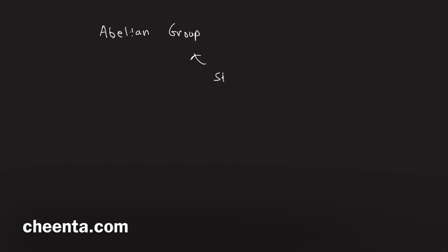Today we will learn about abelian groups and there is a very powerful structure theorem related to abelian groups. I'll start with an example so that we completely understand this. Suppose G is an abelian group and it has 15 elements — so we just know the number of elements of this group. What can we say about G? Can we understand G completely just by knowing the number of elements?